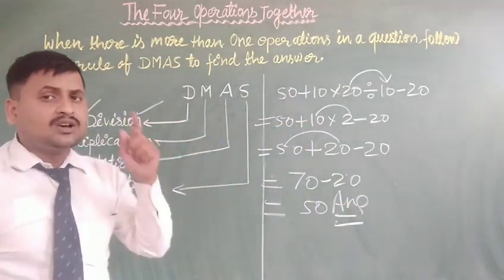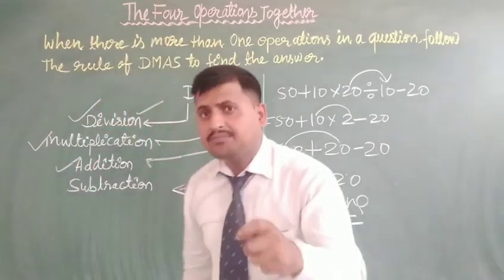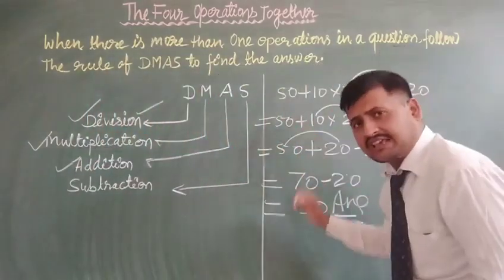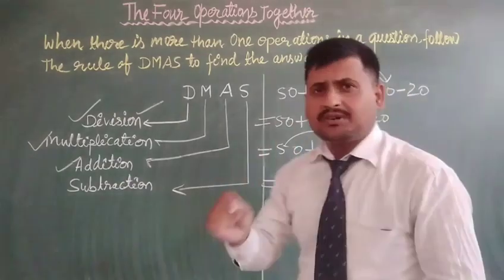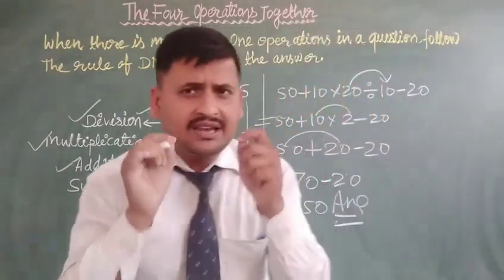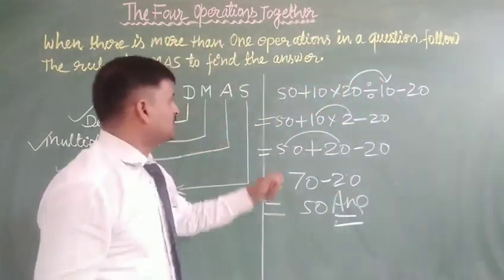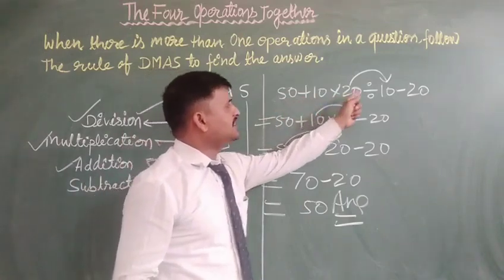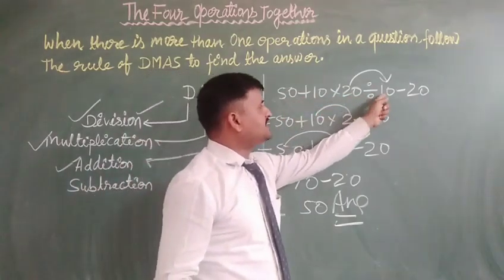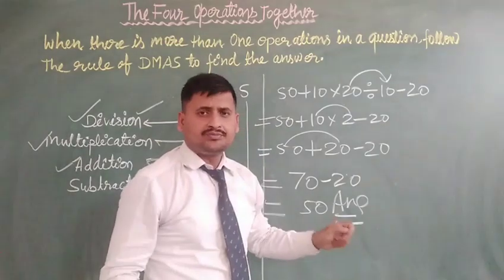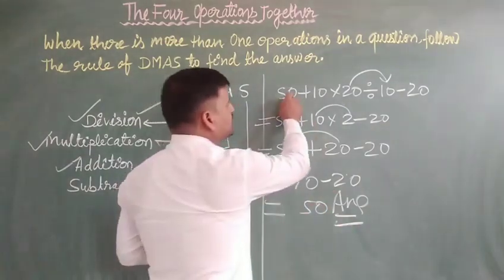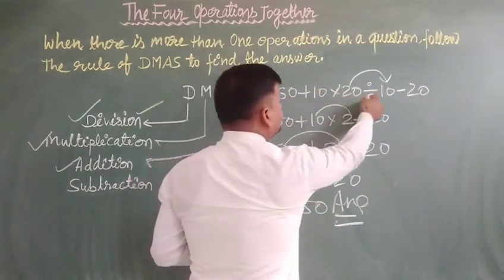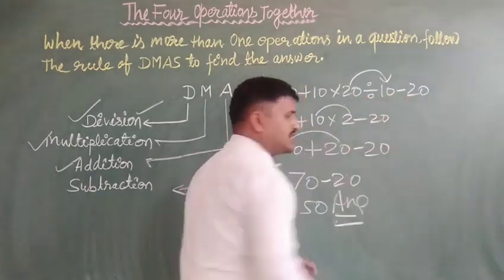Any confusion? Let me repeat once again. Your second question is very very important for you. So once again: 50 plus 10 multiply 20 and divide by 10, minus 30. So: 50 plus 10 multiply 20, divided by 10, minus 20.